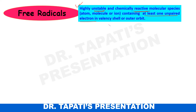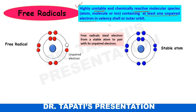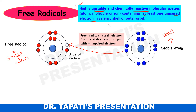Now if you see this figure, a free radical can steal an electron from a stable atom to pair with its unpaired electron. In that condition, the free radical will be converted to a stable molecule or stable atom, whereas this stable atom will be converted to an unstable atom or free radical.